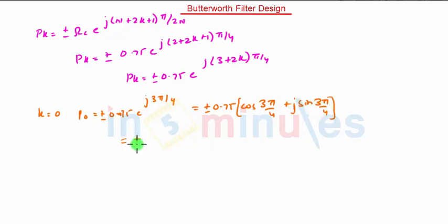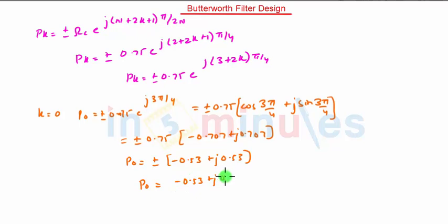It will give us plus minus 0.707 plus J 0.707 that is P0 is equal to plus minus minus 0.53 plus J 0.53. So P0 is given as minus 0.53 plus J 0.53 and again minus 0.53 minus J 0.53.